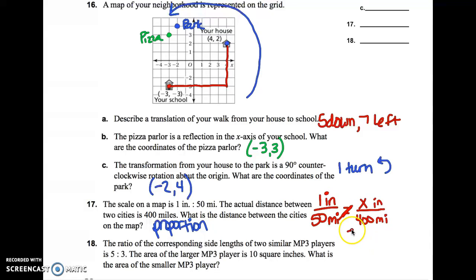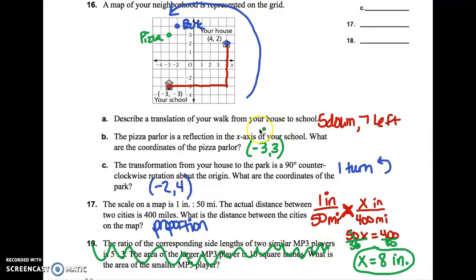So, 50 times x is 50x. 400 times 1 is 400. To get that x by itself, divide by 50 on both sides. So, x equals 8. So, on the map, that would represent 8 inches. And then, I had you cross out 18. We didn't worry about doing that one. So, like I told you in class, if you know how to work through the problems on this study guide, then you're going to be set for your test. And these videos should help you out quite a bit if you forgot how to do something.